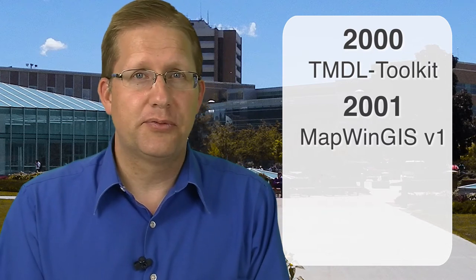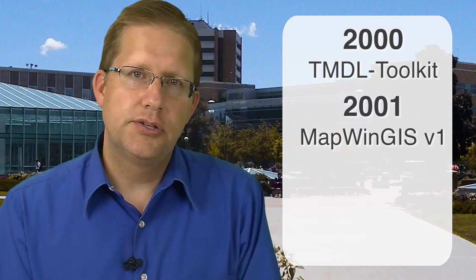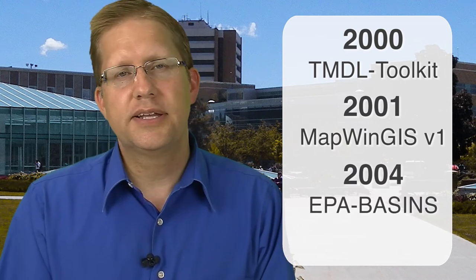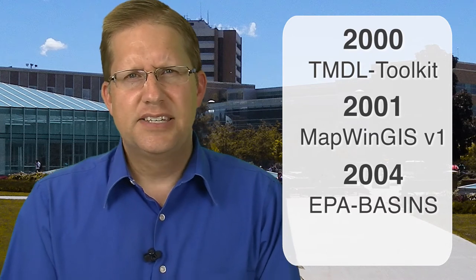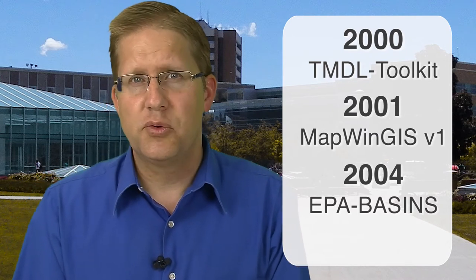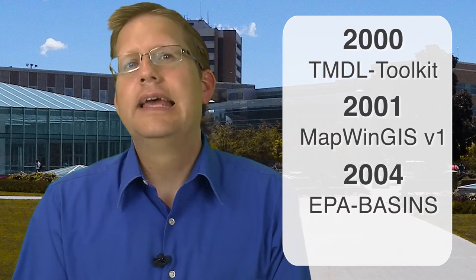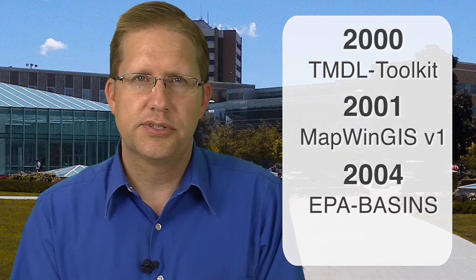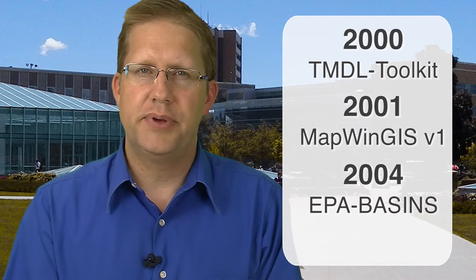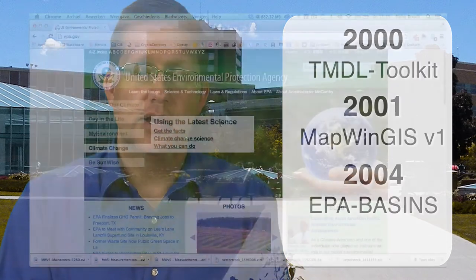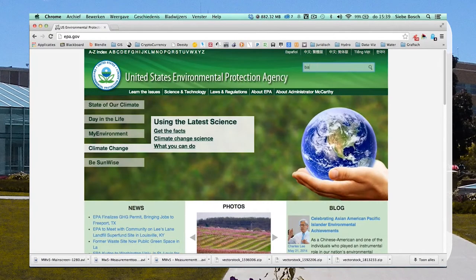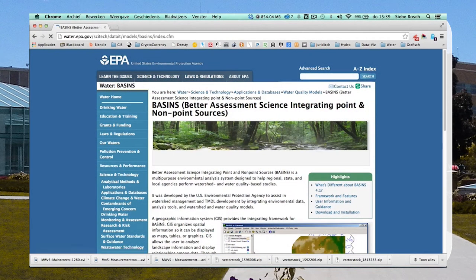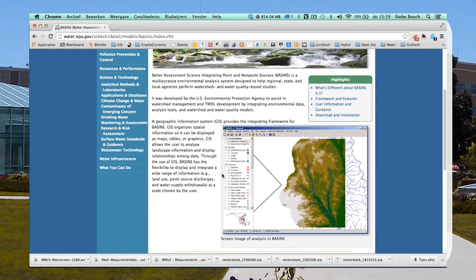Originally we started charging for use of that ActiveX control. Later, in 2004, we got a contract with the United States Environmental Protection Agency to build a GIS-based watershed modeling system that would be completely free — but only if we made the software open source. So all MapWindow source code was released as open source using the Mozilla Public License, and we began building something called Basins. Basins 4 is still available online from the US EPA, and many people around the world still use it for water quality modeling applications.